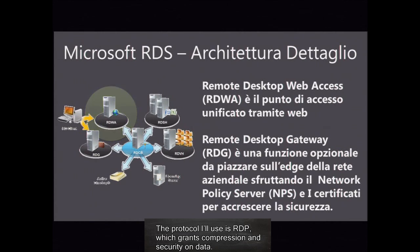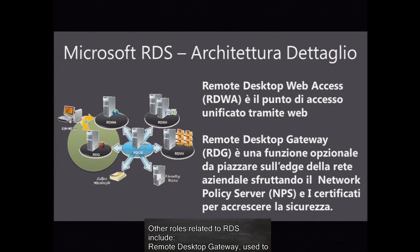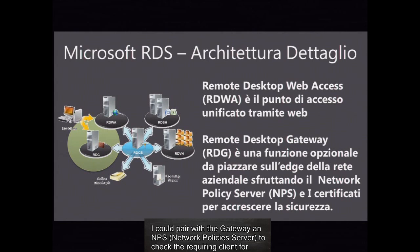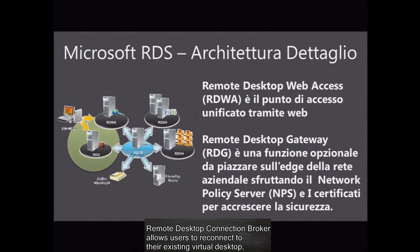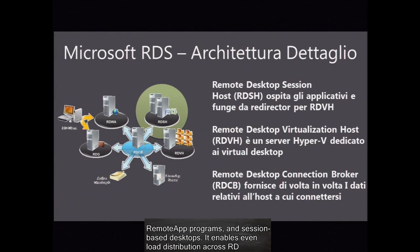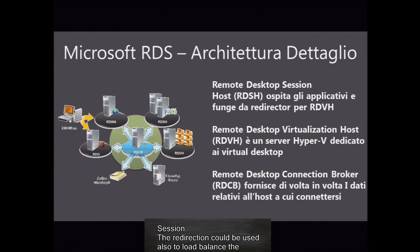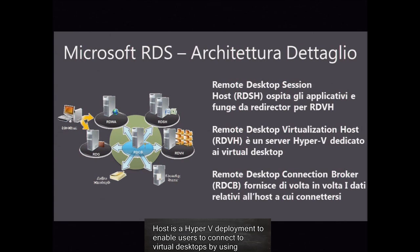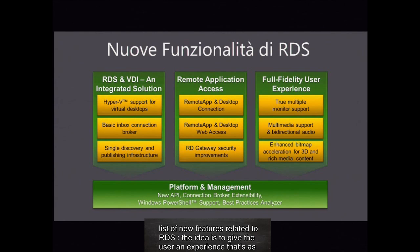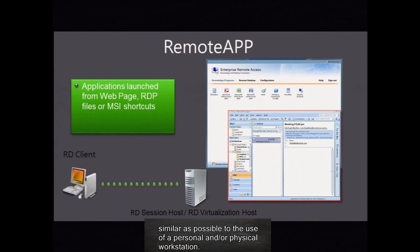The protocol used is RDP, which grants compression and security on data. Other roles related to RDS include Remote Desktop Gateway, used to expose the service to the internet, for example putting the gateway in a DMZ. I could pair the gateway with NPS, Network Policy Server, to check the requiring client for compliance with company rules on antivirus software, patches, and so on. Remote Desktop Connection Broker allows users to reconnect to their existing virtual desktop, remote app programs, and session-based desktops, and enables even load distribution across RD sessions. The redirection could be used also to load balance the workload on a per-single application basis. Remote Desktop Virtualization Host is a Hyper-V deployment to enable users to connect to virtual desktops using Remote App and Desktop Connection. The idea is to give the user an experience that's as similar as possible to the use of a personal and/or physical workstation.